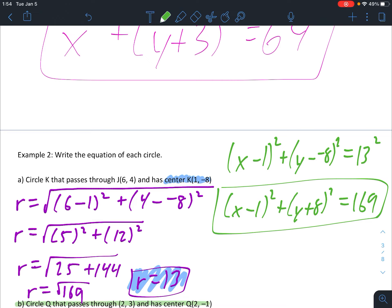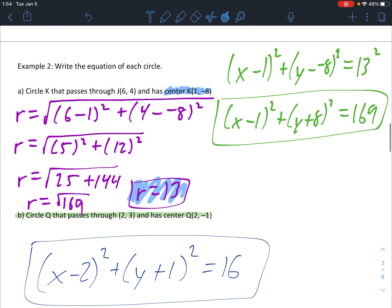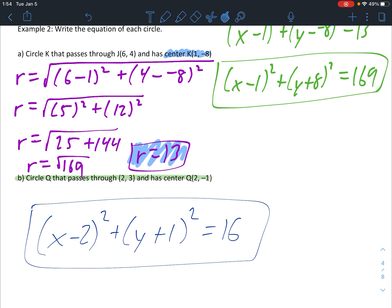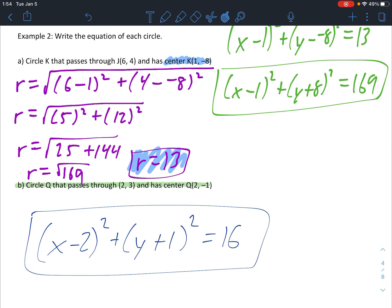Once again, pause the video and please try problem 2b. Here's the answer you should have got for problem 2b. You should have got your radius equals 4. And substituting everything in and cleaning it up, you should have got x minus 2 squared plus y plus 1 squared equals 16.